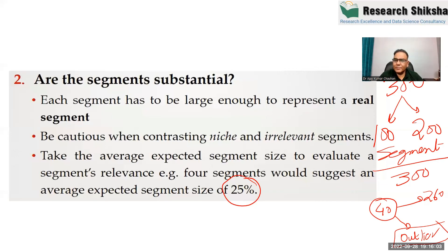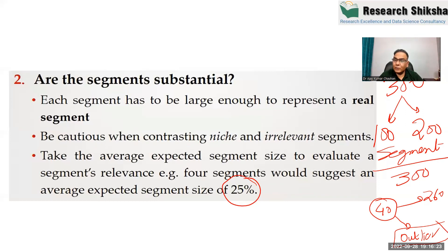Very few observations do not actually represent a niche segment — they represent outliers. So POS is one method with which you can also remove outliers. If we apply POS with a large number of segments and remove the segment with very few observations, we can identify and eliminate outliers.